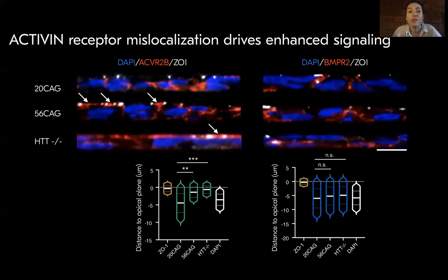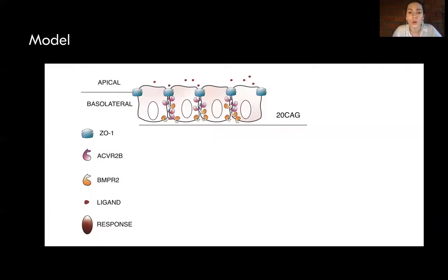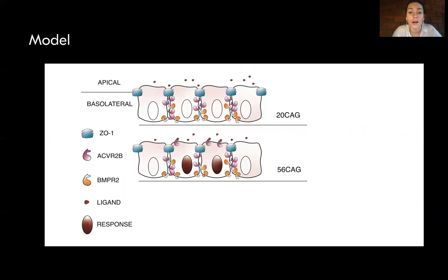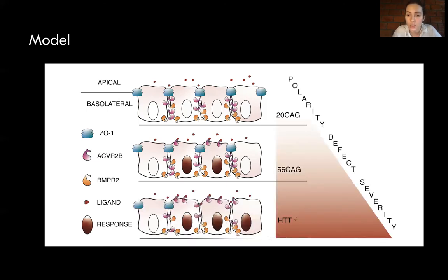Finally, these results explain that activin receptor mislocalization is what's driving the enhanced activin signaling seen in the Huntingtin CAG-expanded cell lines. In conclusion, I propose a model: in wild type, TGF-beta receptors are localized to the basolateral side and remain silent to apically presented ligands. Huntingtin CAG expansion fails to completely relocalize activin receptors to the basolateral compartment, leading to ectopic SMAD2-3 signal activation — consistent with a loss of function. Additionally, loss of Huntingtin, besides impairing activin receptor relocalization, also elicits a range of polarity defects extending to impaired tight junction integrity.